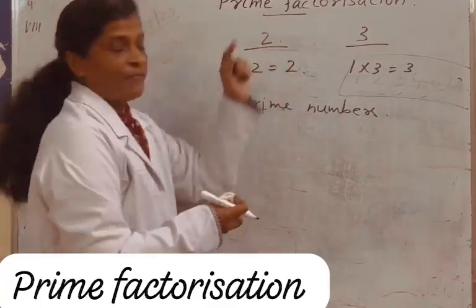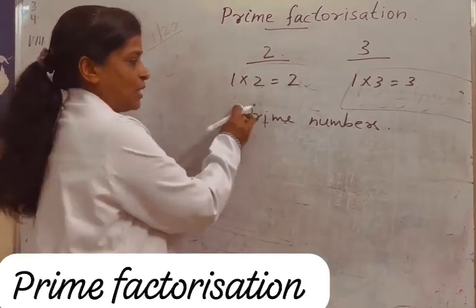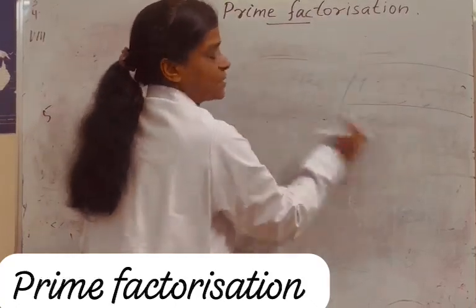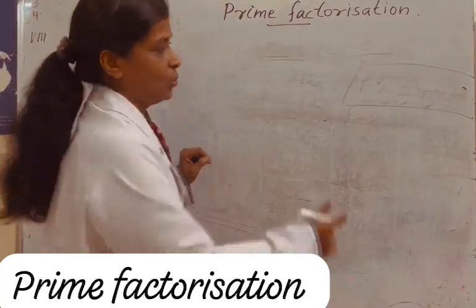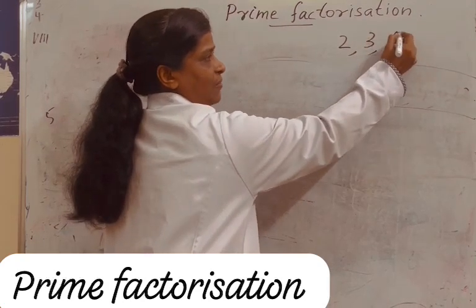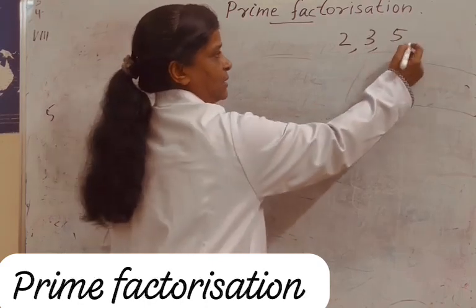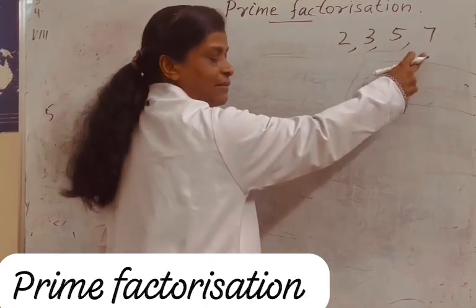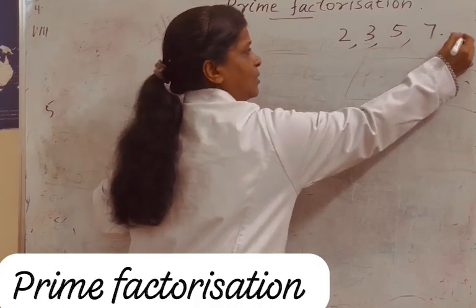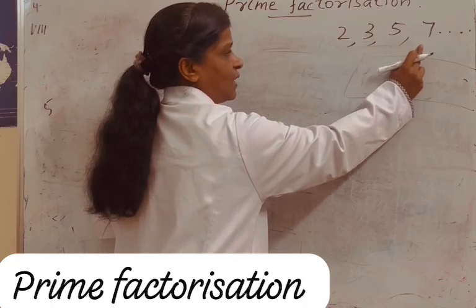In order to do prime factorization, you should know prime numbers up to 10 or 20. The smallest prime number is 2. Next is 3. Next is 5 — factors of 5 are 1 and 5 only. Then 7 — 1 and 7 only, 7 is not divisible by any other number. So it goes: 2, 3, 5, 7...